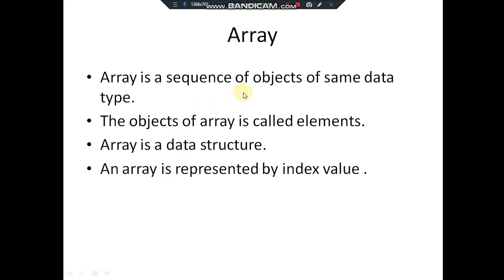An array is a sequence of objects of the same data type. This means an array can store only same data type values. For example, if we declare an array for integer, it will only store integers. If we declare an array for float, it will only store float type variables. The things present in an array are called elements.